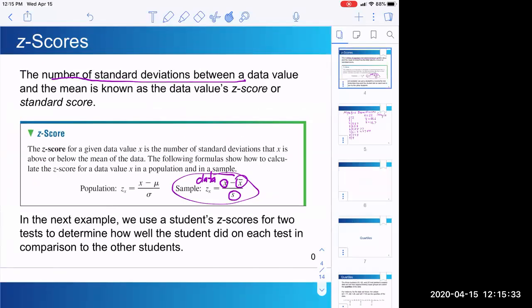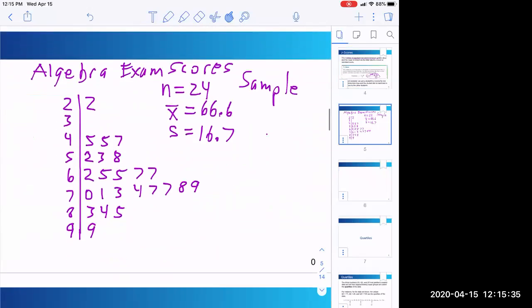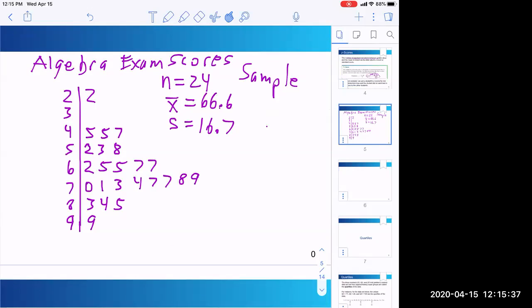So what I've done is I created a fake distribution of algebra exam scores. So there's 24 of them, that's our sample size. The mean is 66.6, so that lies somewhere in the middle of the bulk of the data. Standard deviation 16.7 tells me the data is kind of spread out from the mean.